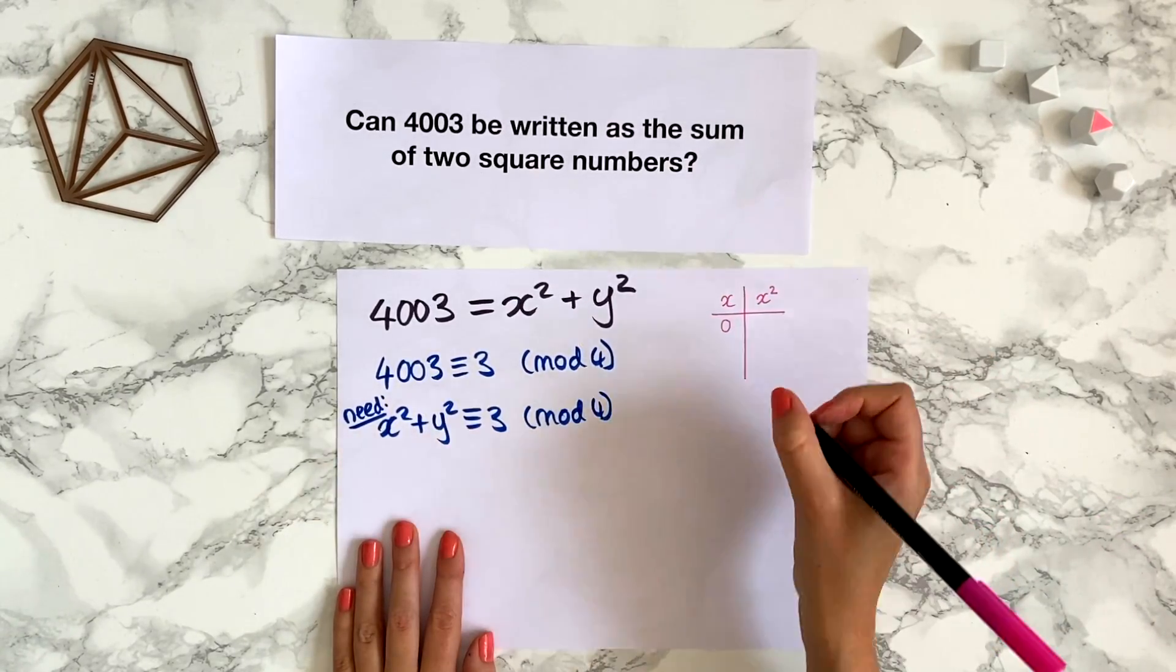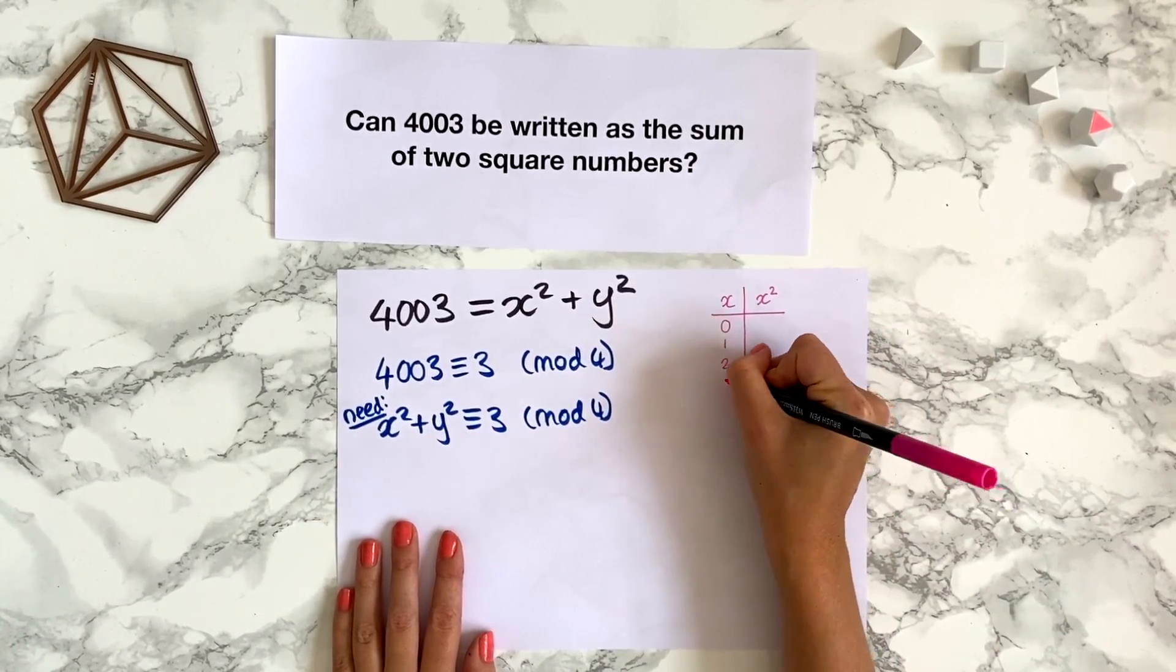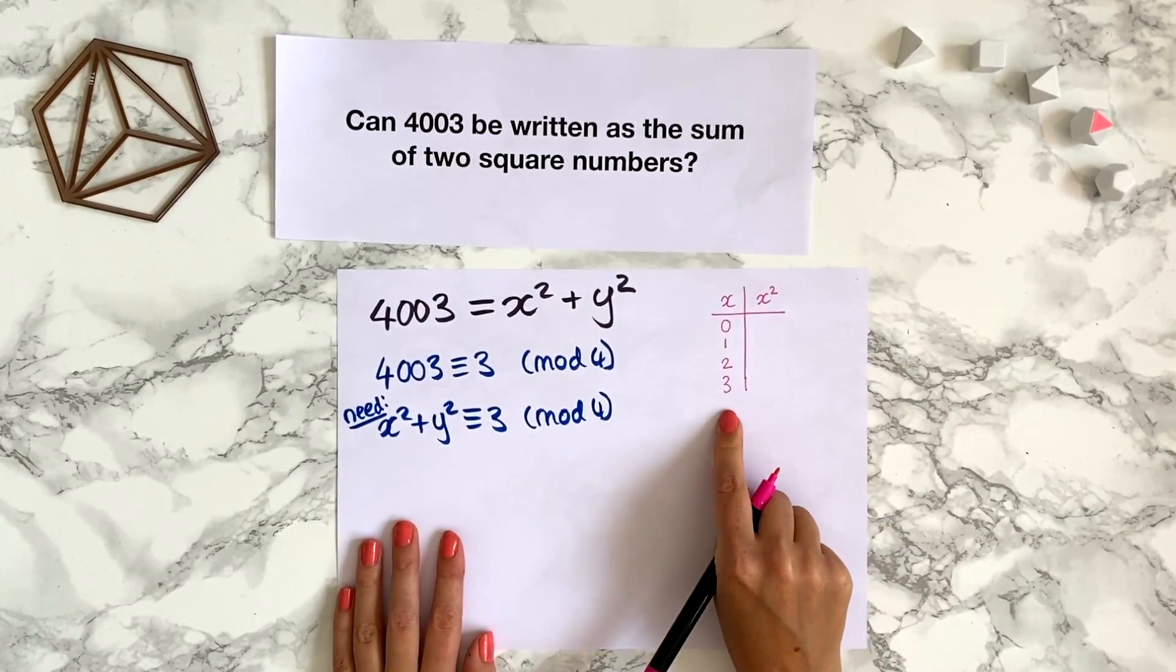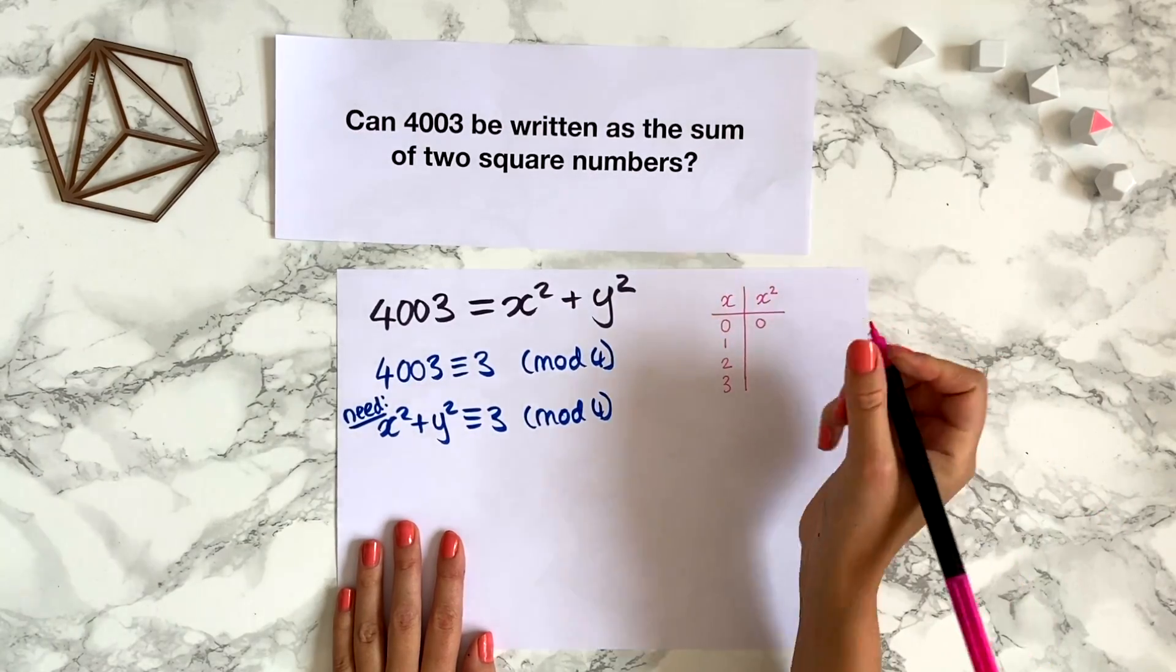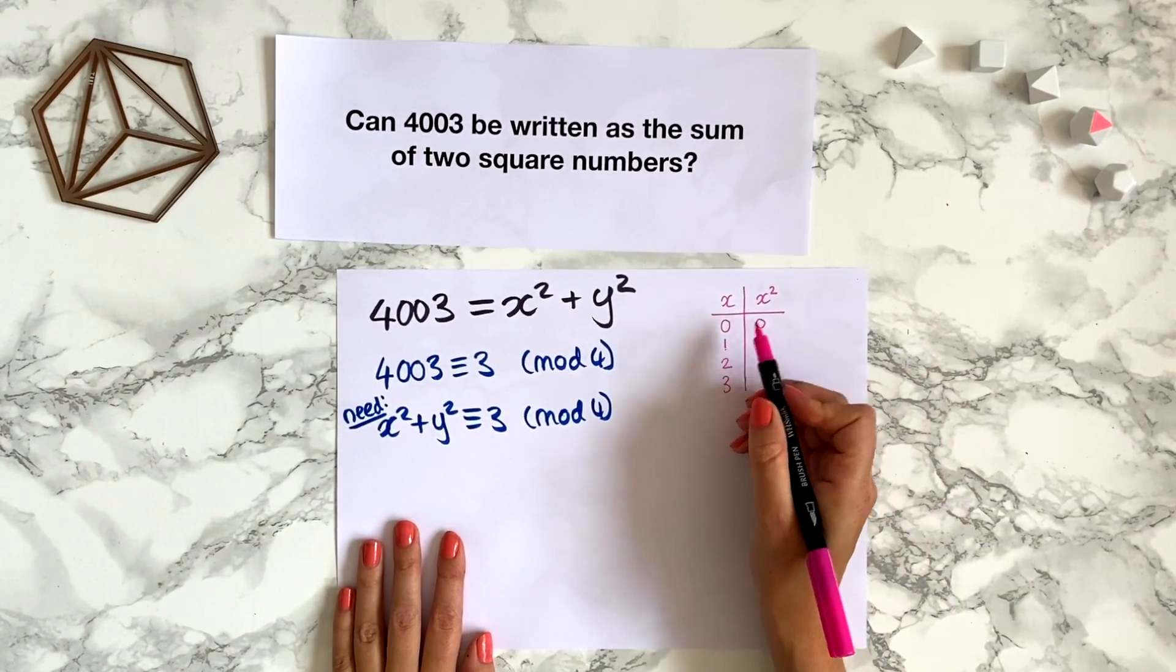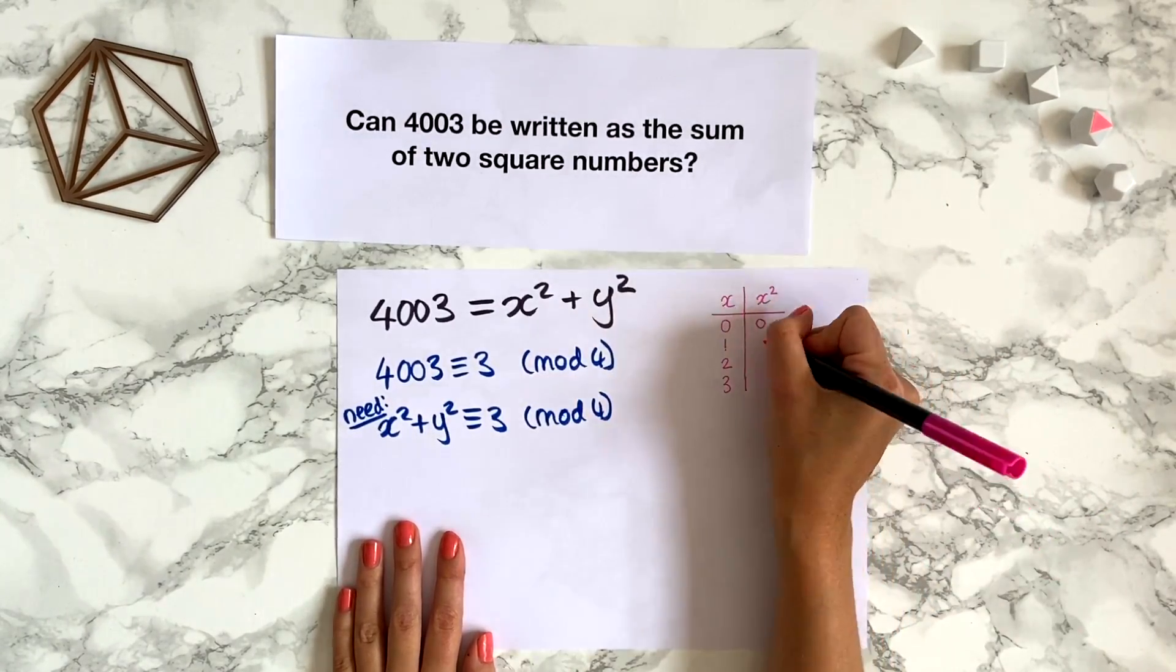So x can be either 0, 1, 2, or 3 in modulo 4. So if x is 0, x squared modulo 4 is still 0. If x is 1, x squared modulo 4 is also 1.